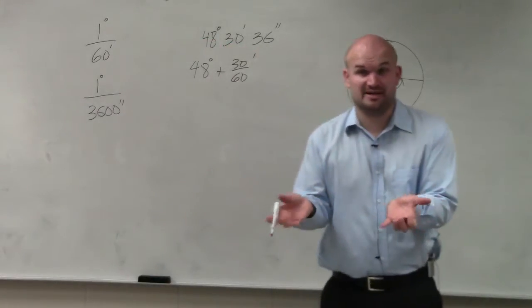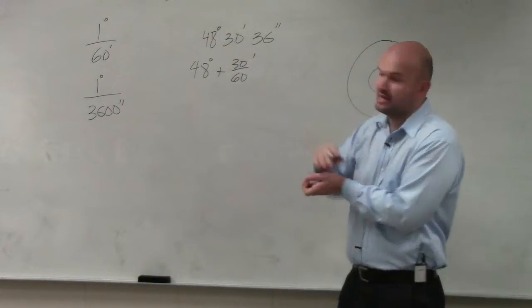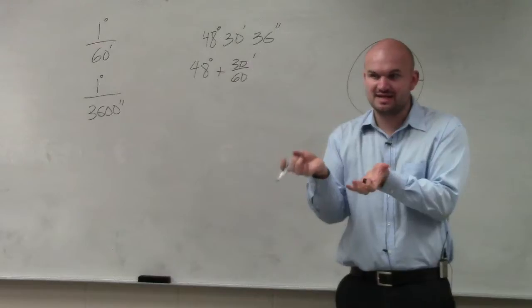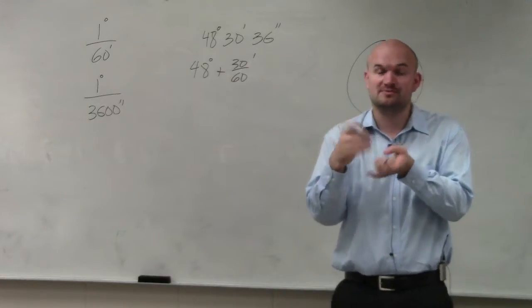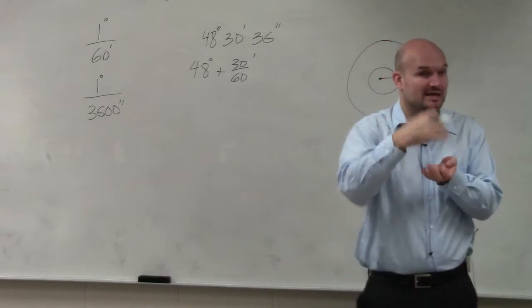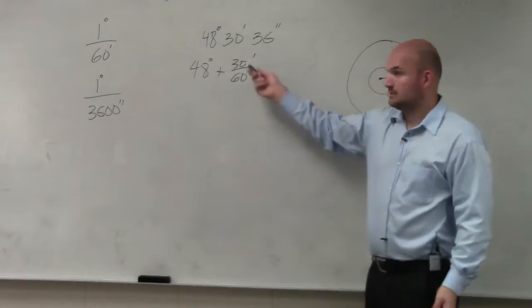Because if we had 60 out of 60 minutes, that would be an extra degree, right? So therefore, we'd have 49 degrees. But we don't have 60 out of 60 degrees. We only have, I'm sorry, we don't have 60 out of 60 minutes. We only have 30 out of 60 minutes. Correct?